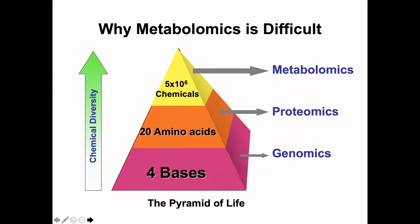The reason for that is that metabolomics is inherently difficult. In genomics, we're just sequencing four bases — the chemistry is well known. In proteomics, we're dealing with polymers consisting of just 20 amino acids. In the world of chemicals, there are anywhere from two to five million biologically relevant chemicals. The chemical diversity we have to deal with in metabolomics is hundreds to thousands of times more complex than it is for proteomics and genomics. That's why metabolomics is difficult, and why coverage is typically only one to five percent.